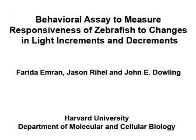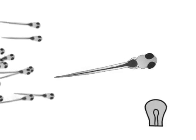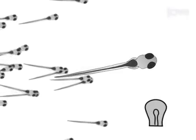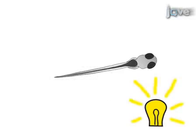In the Dowling lab we study the physiology and development of the retina in zebrafish. In order to determine whether or not zebrafish mutants that are unable to detect motion can detect light and are not blind, we test their visual motor response or VMR.